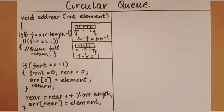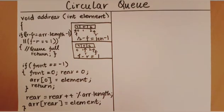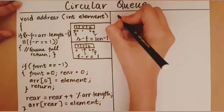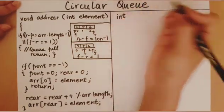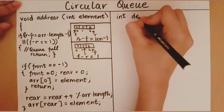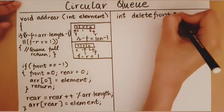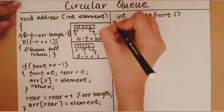We have inserted the element into the rear of the array and our work for this function is done. We have now seen how to add an element to the rear of the queue. Now let's look at how to delete an element from the front. We are going to return an integer and have no input variables.